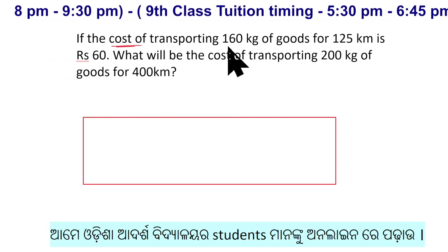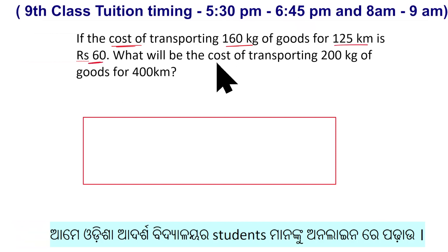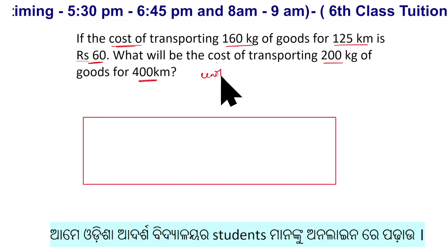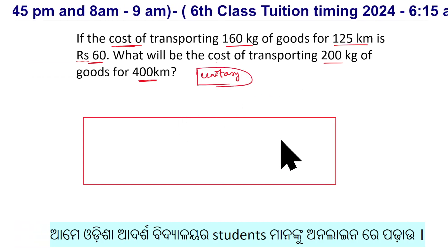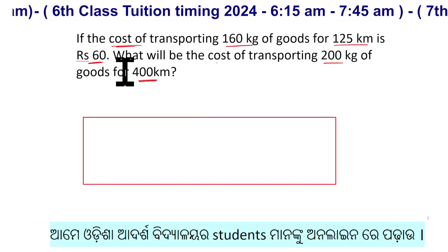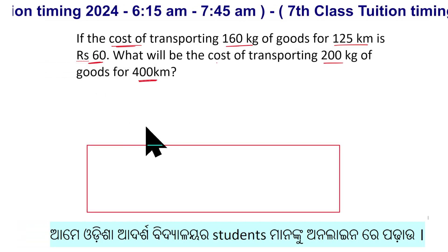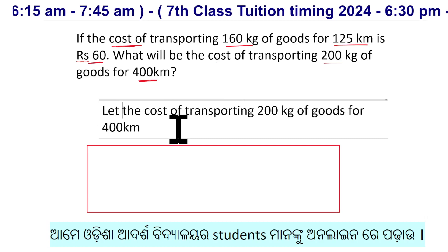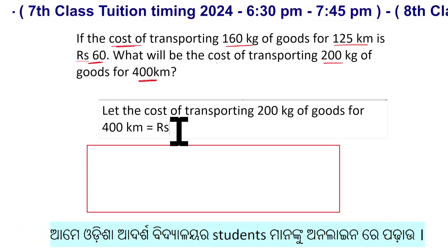The cost of transporting 160 kg of goods for 125 km is Rs. 60. What will be the cost of transporting 200 kg of goods for 400 km? Let the cost of transporting 200 kg of goods for 400 km be equal to Rs. X.